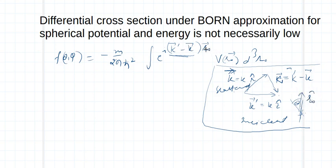If kappa and r naught makes an angle theta naught, then theta naught means what? It means I can rewrite this thing and this expression will become equal to f theta phi is equal to minus m over 2 pi h cross square e raised to per iota